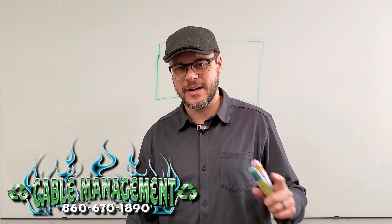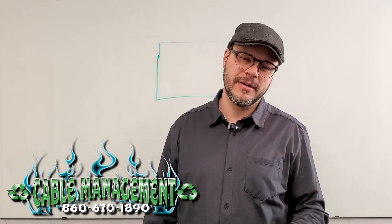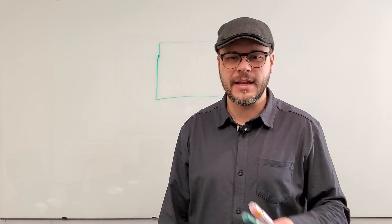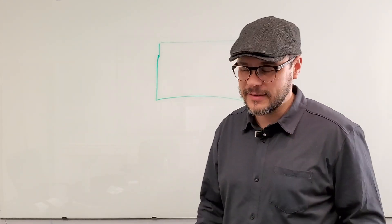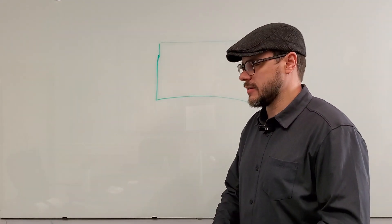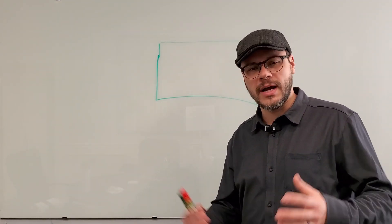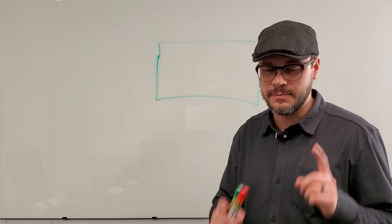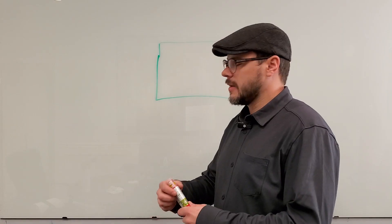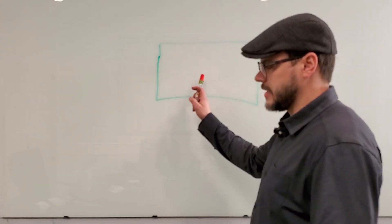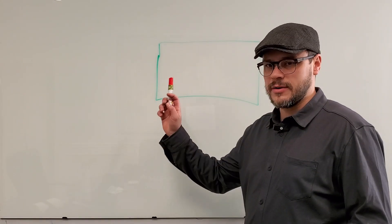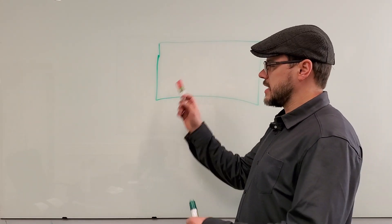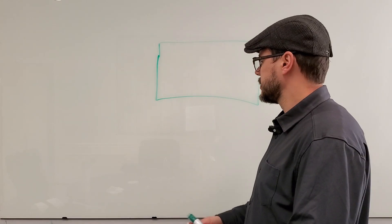Happy Friday. Today we're going to talk about aluminum and copper separation. A lot of times we get the question of why are you able to separate those? Well, they're different densities, but we're not always able to separate them, and here's why. What ends up happening on an air table — or a water table, in this case — we'll talk about air tables.